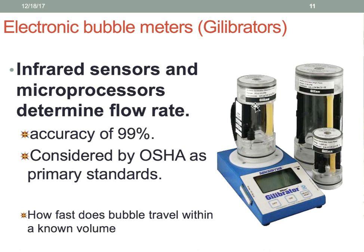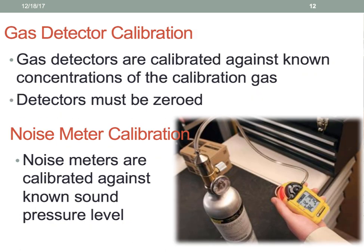There are also other bubble meters. Other types of primary standards include: if we have a gas detector, such as a photo ionization gas detector, we would use a known calibration gas that comes in a bottle, as well as noise meters.